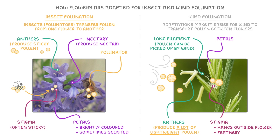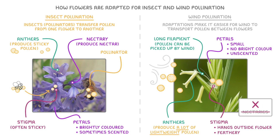The petals of wind-pollinated flowers don't have many adaptations — they're usually small, have no bright colours, are usually green, and tend to be unscented. This is because they don't need to use a lot of energy on adaptations that attract pollinators. Wind-pollinated flowers also have no nectaries, because insects won't be visiting them, so it would be a waste of energy to make nectar.